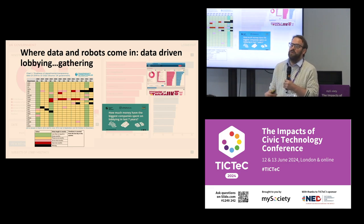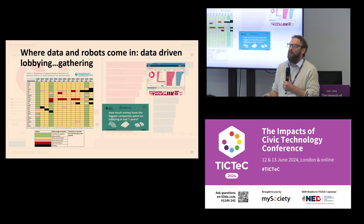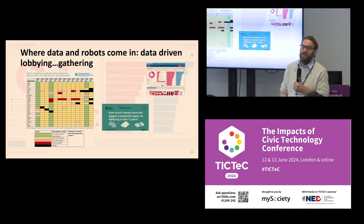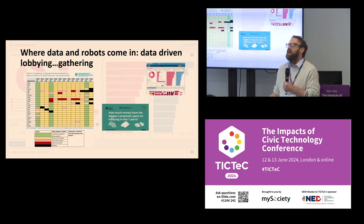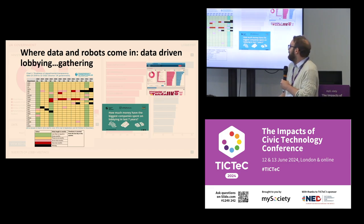Modern lobbying is much more about two things. The first is data — governments publish far more data about what's happening in the lobbying world. Here are some examples from the UK: data about meetings between ministers and other parties, extensive registers of interests where you can find connections between different politicians and different groups who might be giving them money or assistance. It comes with a large qualification: lots of this data is incomplete, and there are many loopholes and ways around it. Nevertheless, it is becoming a more data-driven activity.